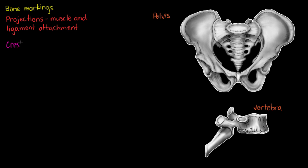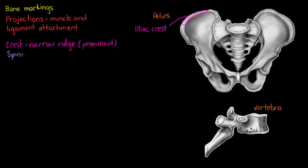The first structure we are going to focus on is called a crest. The crest is a prominence of the bone that often has the appearance of a narrow ridge. Looking at the crest of the ilium up here, we can see this structure — that will be called the iliac crest. With bone markings we usually use the abbreviation for the bone and then the actual name of the marking, so in this case, iliac crest.